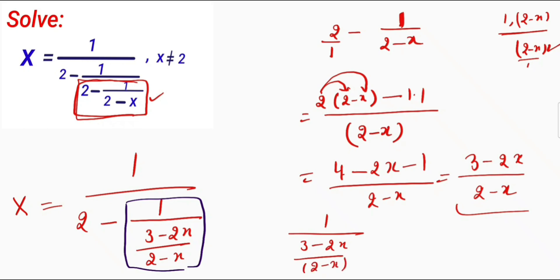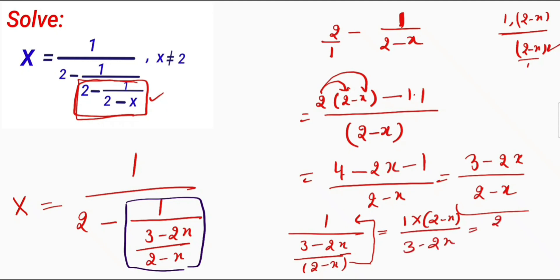So here 2 minus x will go up. I will get 1 times 2 minus x, divided by 3 minus 2x, which is equal to 2 minus x divided by 3 minus 2x.